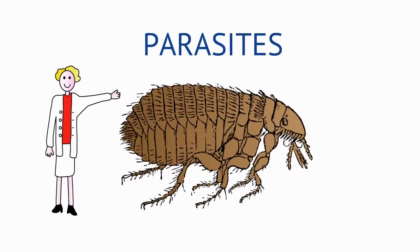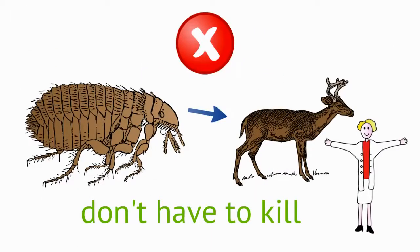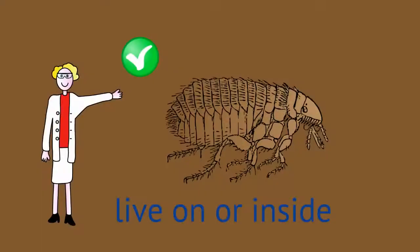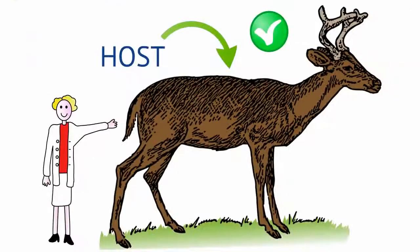But what about parasites? Parasites don't have to kill an animal in order to feed off it. In fact, parasites live on or inside a living animal, harming it, but not killing it immediately. The animal they live on and feed off is called the host.